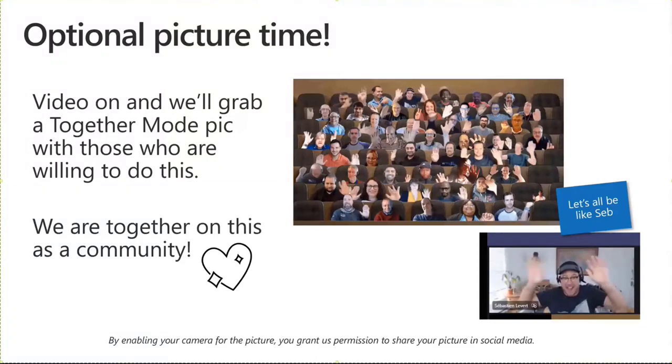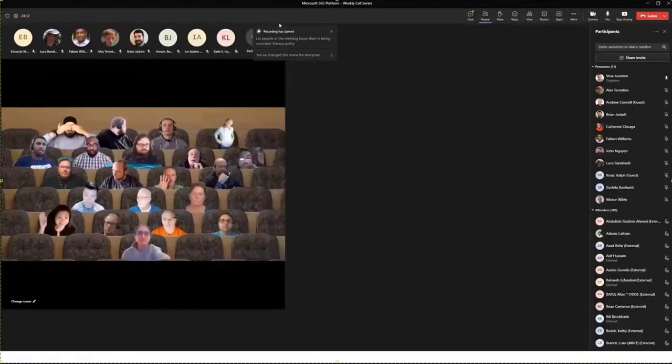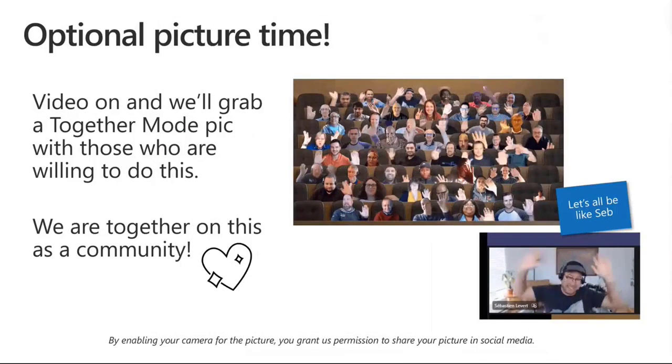Before going to the main sessions, let's do a quick group photo using Together Mode in Microsoft Teams. We have 50 seats in the room — enable your camera and we'll grab a GIF animation. Let's start waving hands — everybody say hello, thank you for being here. Excellent, let's grab a GIF animation out of that.